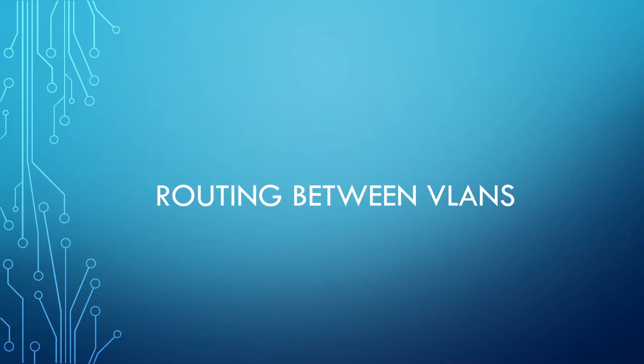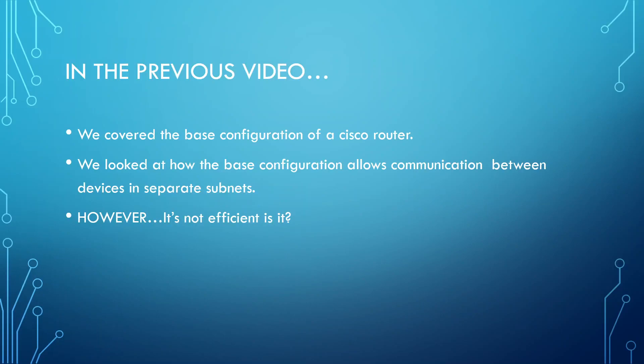Hello and welcome back to the CCNA video series brought to you by ABY Design and Tech. In this video we're going to follow on from the previous video and look at how we can route traffic between VLANs. In the previous video we saw the base configuration of a Cisco router and how we can facilitate inter-VLAN communication. I had two VLANs, VLAN 10 and VLAN 20, with two separate physical links running from my switch to my router — one link in VLAN 10 and one in VLAN 20 — and devices in both VLANs were able to communicate.